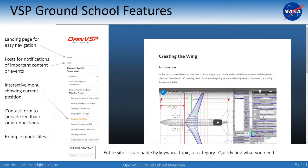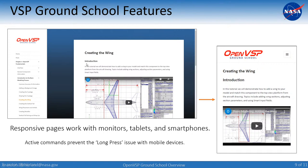A nice feature is that this site is entirely searchable by keyword, topic, or category. So you can quickly find what you need — if you want to learn about how to model a wing, you search for 'wings' and it will pull up anything categorized with that word. Another handy feature is that this website is responsive, so it works with monitors, tablets, or smartphones and smart devices.